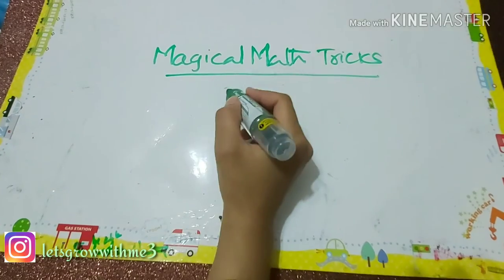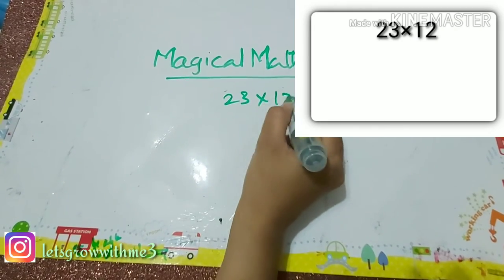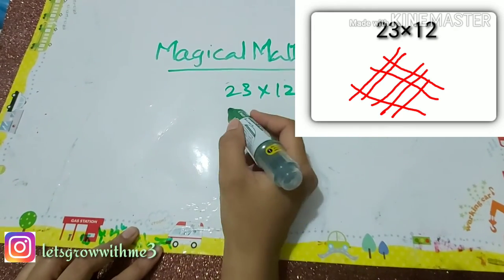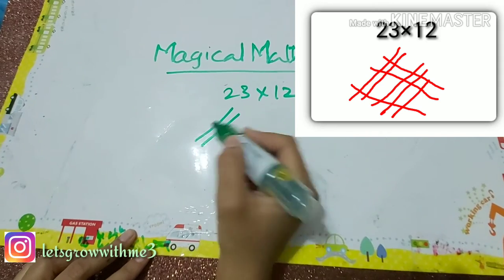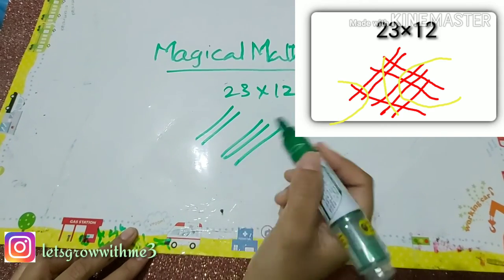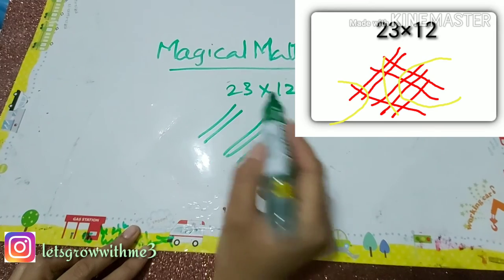So that is 23 times 12. Here you have to represent these numbers in the form of lines. That is two slanting lines, and this is for 23, and one two you have to draw in opposite direction.